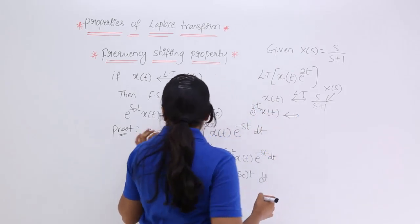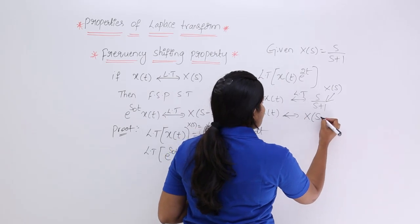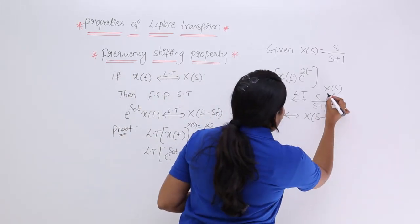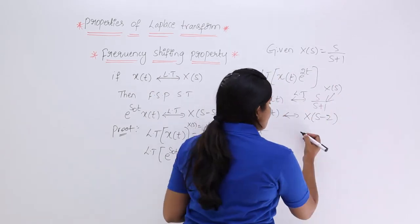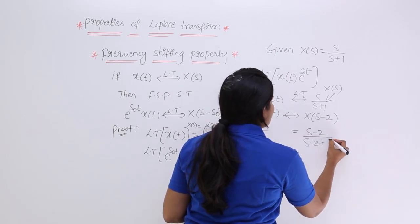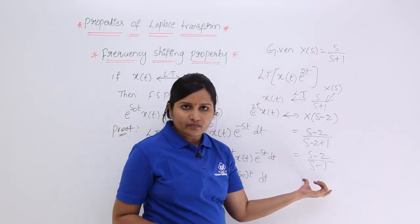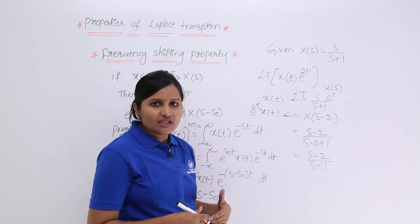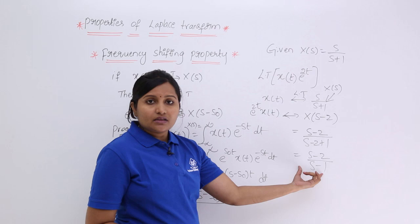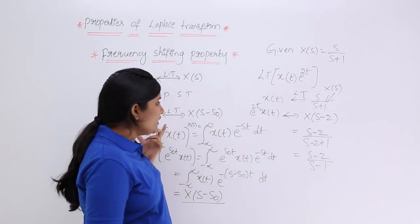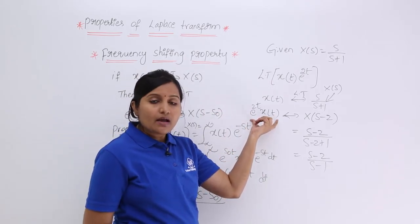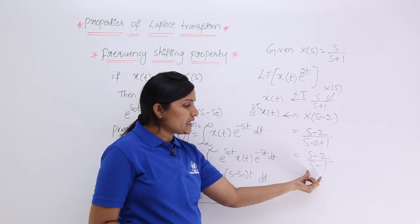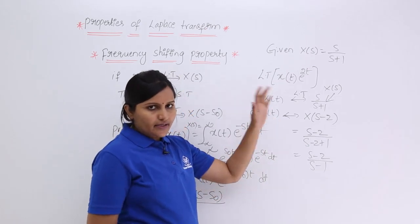Applying the frequency shifting property to e^(2t)·x(t), X(s) becomes X(s - 2). So wherever we have s in X(s) = s/(s+1), I replace s with (s - 2). That gives (s - 2)/((s - 2) + 1) = (s - 2)/(s - 1). Without solving any integration, we get the Laplace transform of e^(2t)·x(t) as (s - 2)/(s - 1) using the frequency shifting property.